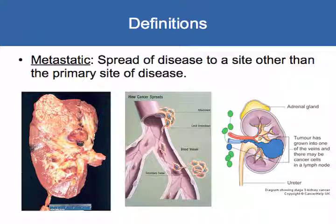Metastatic disease is spread of disease to a site other than the primary site. You can see a tumor in the kidney here. The tumor can spread typically through two directions: hematogenous spread, where it travels through the blood and grows at another site, or lymphatic spread, where tumor spreads to nearby lymph nodes.